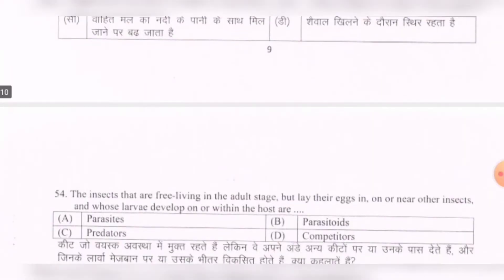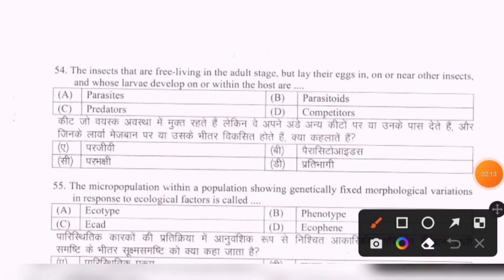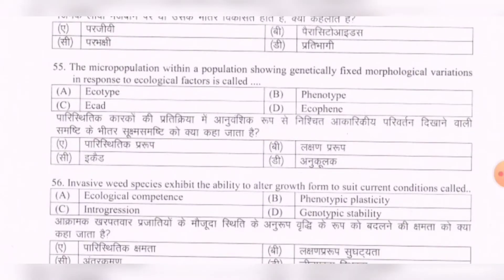Next question: The insects that are free-living in the adult stage but lay their eggs in, on, or near other insects, and whose larvae develop on or within the host, are called — options are: parasites, parasitoids, predators, competitors. The correct option is B — parasitoids.